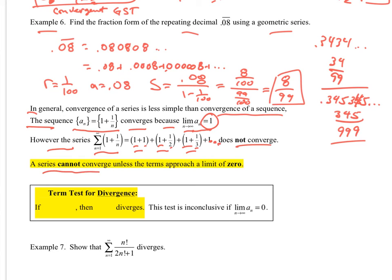So a series cannot converge unless the terms approach a limit of 0. Now, this is only for a series. This is not for a sequence. The sequence just has to approach some number. Could be 1, could be 20, doesn't matter. But for this one, the series cannot converge unless the terms approach 0.